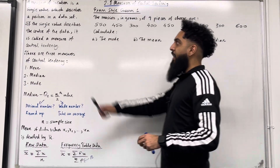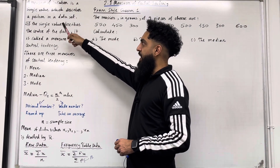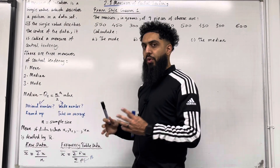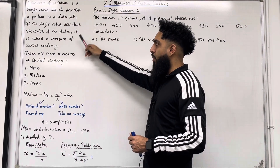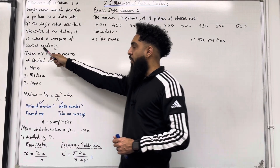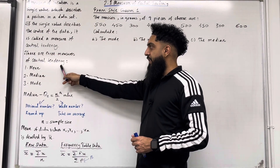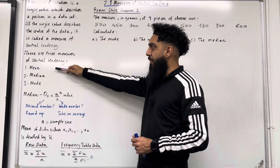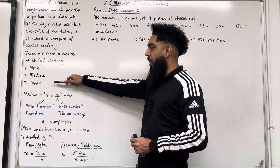Firstly, a measure of location is a single value which describes a position in a data set. If the single value describes the centre of the data, it is called the measure of central tendency. There are three measures of central tendency: number 1, the mean; number 2, the median; and number 3, the mode.